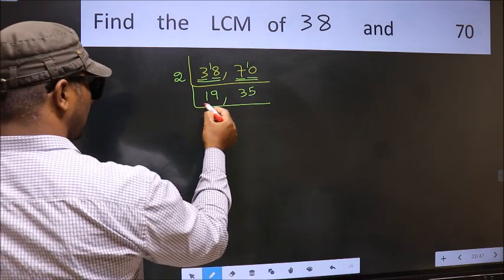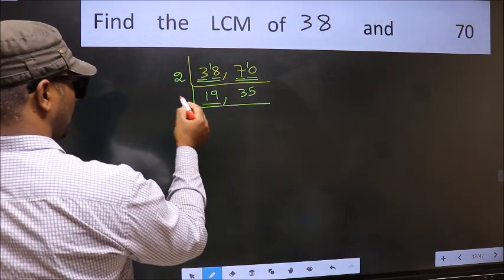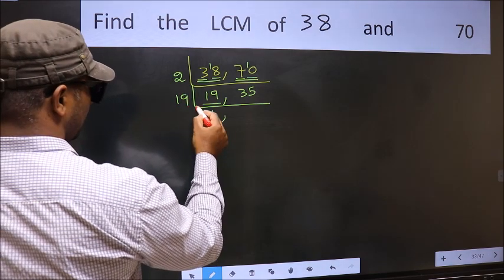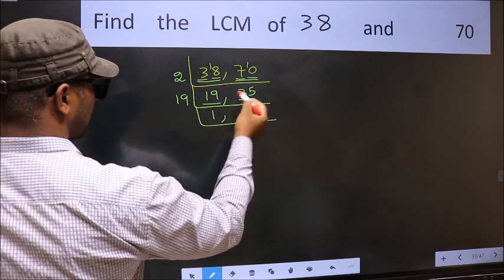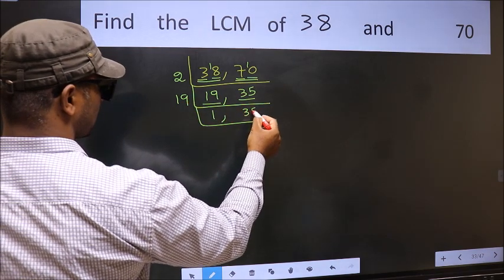Now here we have 19. 19 is a prime number, so 19 once 19. The other number 35, not divisible by 19, so we write it down as it is.